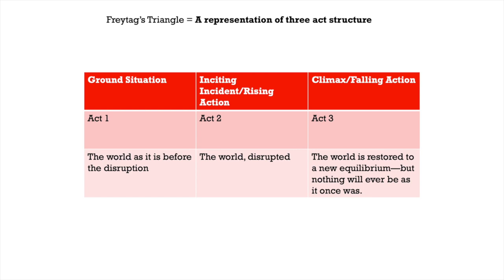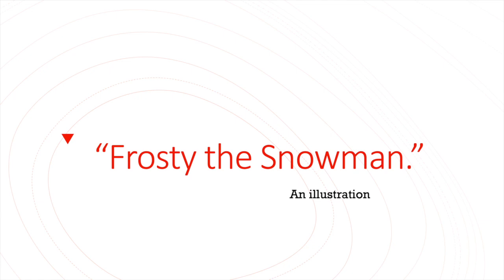Let's apply what we're learning here to an old story you probably know by heart: Frosty the Snowman. I'll go through the story without the thumpity-thump-thumps to show you how it maps to Freytag's triangle. Along the way, I'll point out some other moves this story is making, so you might steal them for your own work.